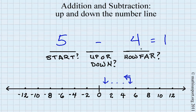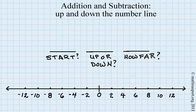I know you feel this is pretty trivial, but now let me show you why using these three questions — start, up or down, and how far — really makes it easy to not get confused when you have negative numbers. Let's try this: 5 minus negative 4.